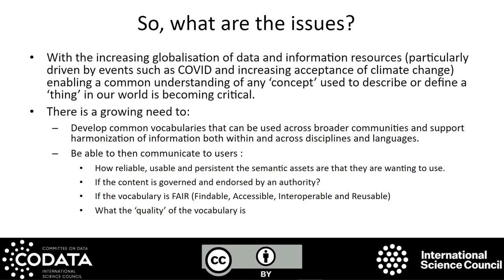With increasing globalisation of data and information resources — particularly as we've seen with COVID and climate change — enabling a common understanding of any concept used to describe and define a thing in our world is becoming critical. We need to develop common vocabularies that can be used across broader communities and support harmonisation across disciplines and languages. But we need to communicate to users how reliable, persistent, and usable is the asset they're wanting to use. Is it governed or endorsed by an authority? Is it FAIR? And more importantly, what is the quality of the vocabulary?